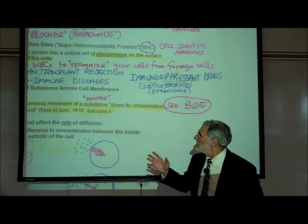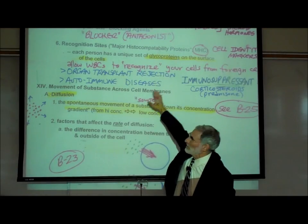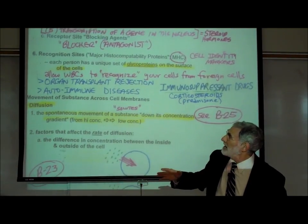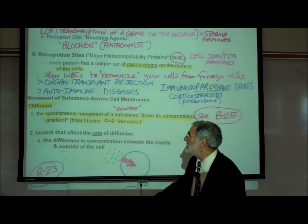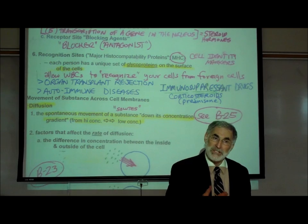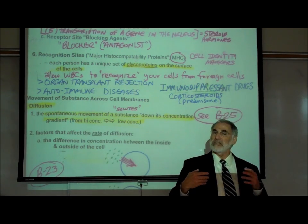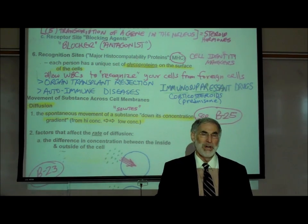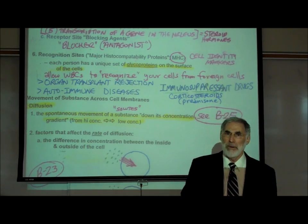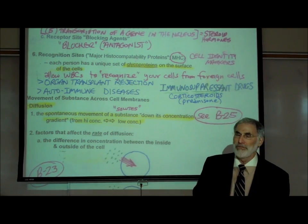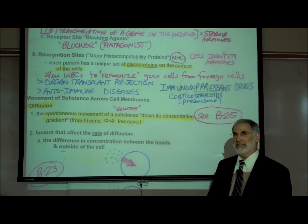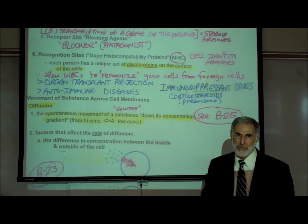When white blood cells attack and destroy the transplanted organ, that's called organ transplant rejection. The natural consequence of taking drugs that suppress the immune response is that it makes the person more susceptible and more vulnerable to becoming sick from infectious diseases — bacterial or viral infections — because they lack the normal immune response. They are immunocompromised.